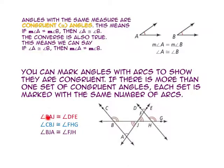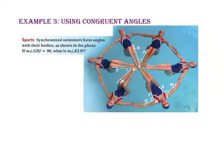Here, angle BAJ has one arc — it is congruent to angle DFE, also with one arc. Next, angle CBJ is marked with two arcs, and it is congruent to angle FHG, also with two arcs. And finally, angle BJA, marked with three arcs, is congruent to angle FJH, also with three arcs.